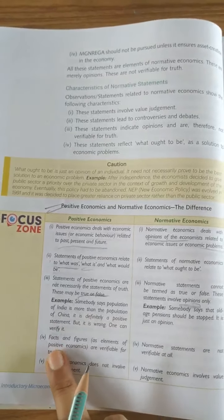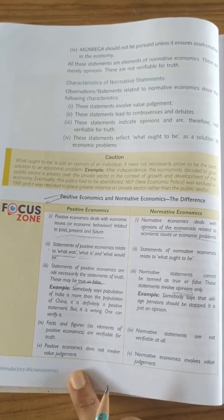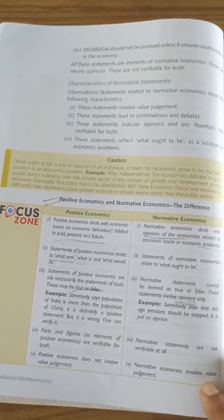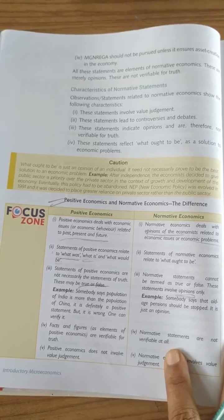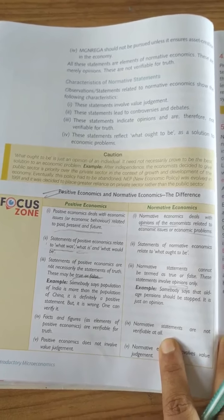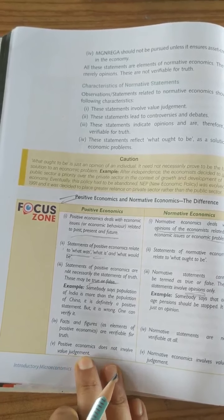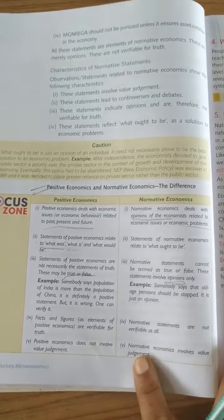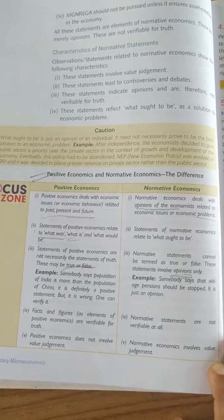The facts and figures of positive economics are verifiable for truth — you can verify and judge them. Normative statements are not verifiable at all, because they are the opinion of a person or economist. Positive economics does not involve value judgment, whereas normative economics involves value judgment. So this is all about today's studies. We will meet again with further topics.